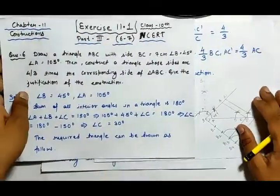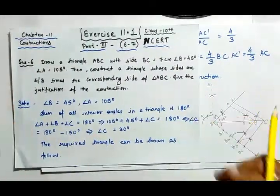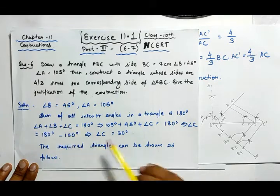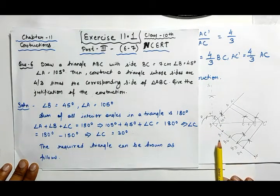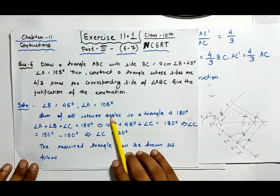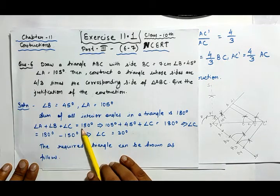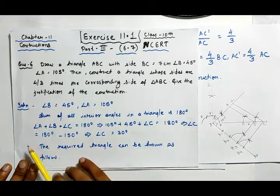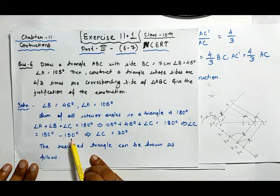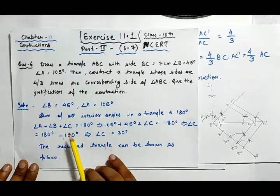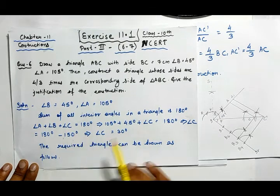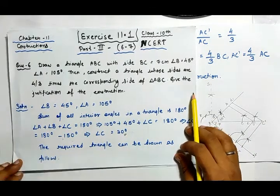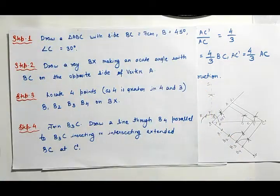Angle B is 45 degrees, angle A is 105 degrees. The sum of all interior angles in a triangle is 180 degrees: angle A plus angle B plus angle C equals 180 degrees. So angle A plus angle B equals 150 degrees. After solving this we get angle C equals 30 degrees.